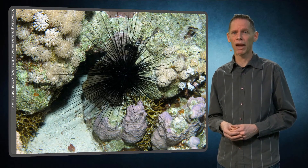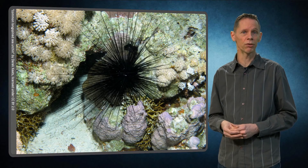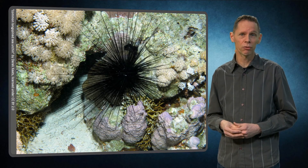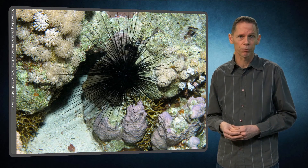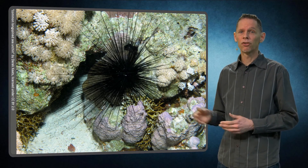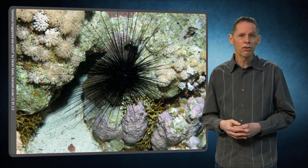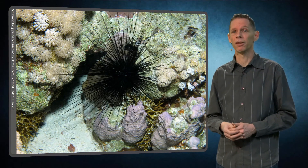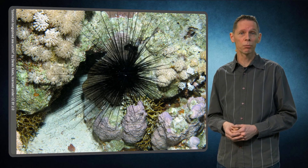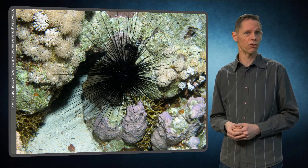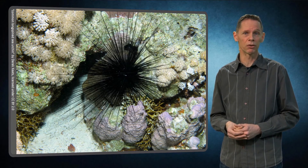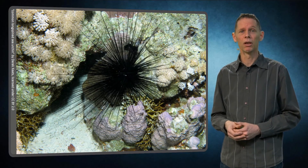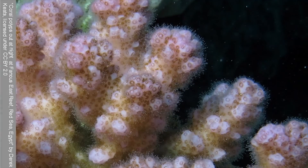Fast growing macro algae live on coral reefs and can overgrow and smother coral. Fortunately, sea urchins graze on these algae, thus keeping the coral clean and healthy. Due to mass mortality of sea urchins, algae became dominant on many reefs in the Caribbean, covering the corals and making it impossible for them to catch light and filter water.